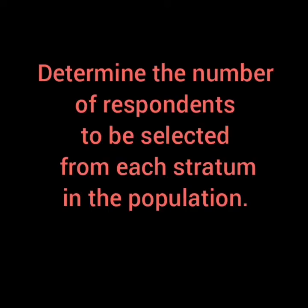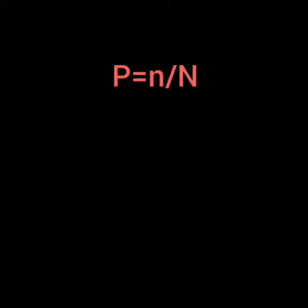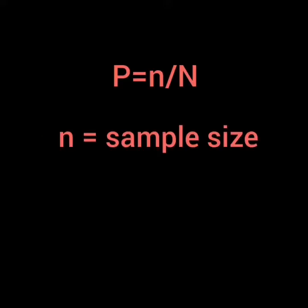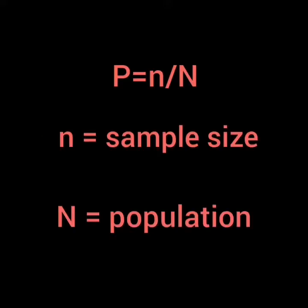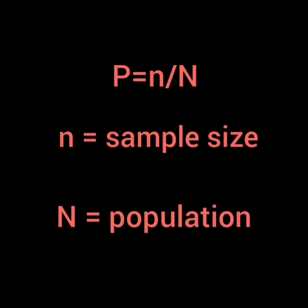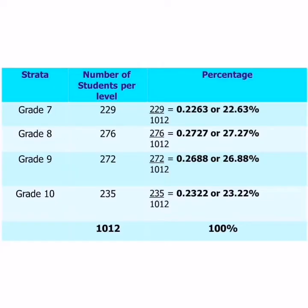The next step is to determine the number of respondents to be selected from each stratum in the population. We calculate that proportion by following this formula, where P equals n over N, where n is the sample size and N is the total population. Using the given formula, we divide the population of each stratum or level by the total population of the whole department.